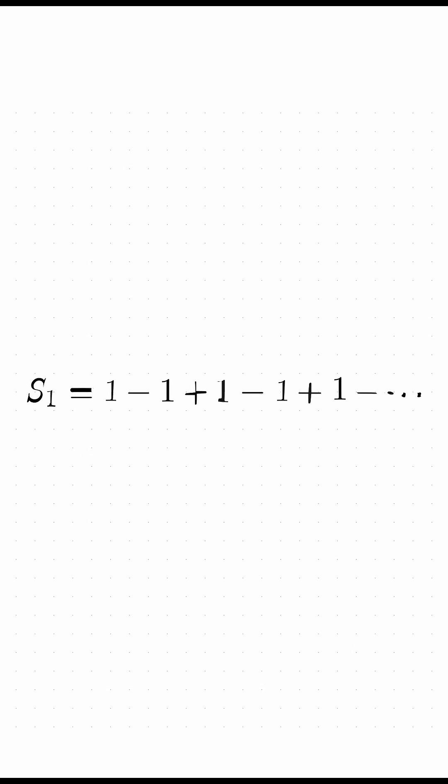Consider first the alternating series S1 equals 1 minus 1 plus 1 and so on. Under Cesaro summation, this oscillating sequence converges to 1 half.